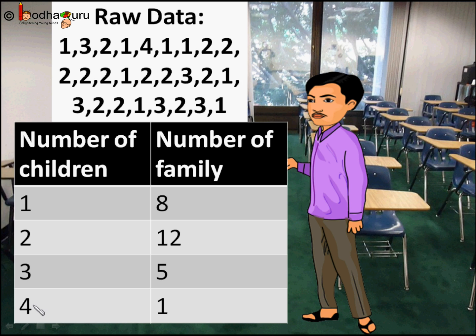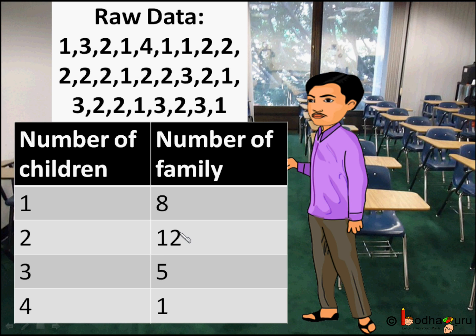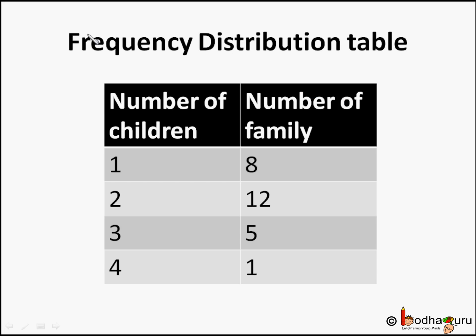1 is appearing 8 times, meaning 8 families have a single child. So now the data seems to make sense — we can see that the family with 2 children is the most common. This table is called the frequency distribution table.